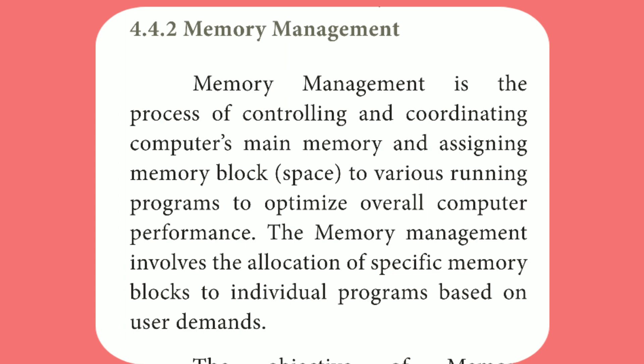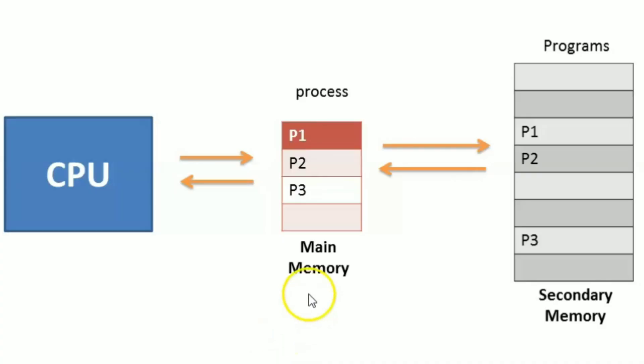You already know what a memory unit is. The computer memory unit has two types: one is primary memory and another one is secondary memory. See the diagram — here is the main memory and here is the secondary memory. We are going to store data in our computer.